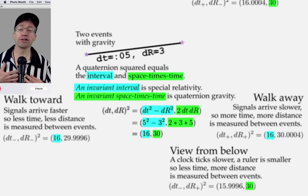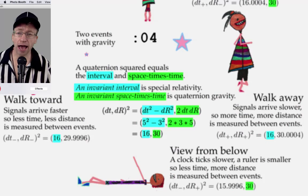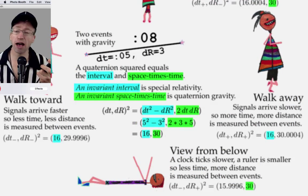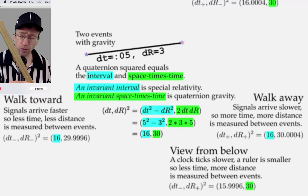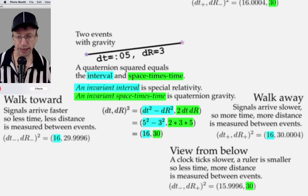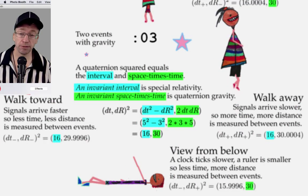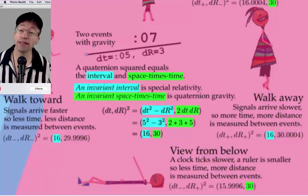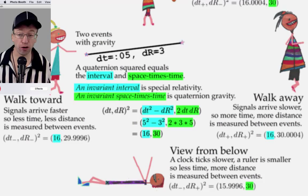I am the Reference Observer. We've got a pair of stars that go supernova, and I measure the time between those two events and say it's five. I measure the spatial distance between the two and say it's three. Now we square those things, because we're working with quaternions, and we get an interval of 16 and a space times time of 30.